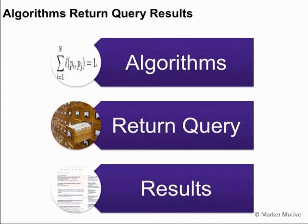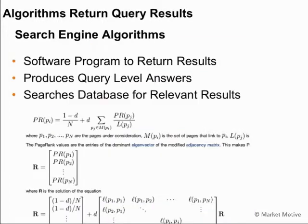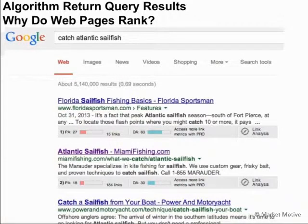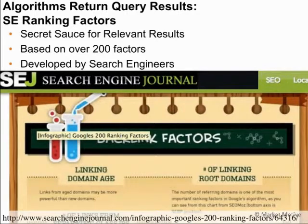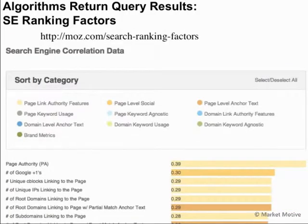The last section — algorithms returning query results — is the nitty-gritty of how search engines work. An algorithm is a software program to return search results, making decisions based on relevance with over 200 factors. There are lots of things powering the back end of Google to decide what gets returned. Algorithms determine why a page ranks where it does. If I search 'Catch Atlantic Sailfish,' those first three sites are positioned because of their page authority, domain authority, and 198 other factors. We can get an idea of many of these from the Moz SEO ranking factors document.